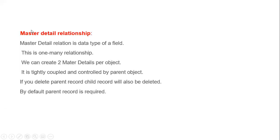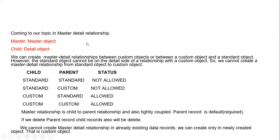Coming to master-detail relationship: it is also a data type of a field, it is a one-to-many relationship, and you can create up to two master-detail relationships per object. It is tightly coupled and controlled by the parent object — if you delete the parent record, the child record will also be deleted. By default, the parent record is required.